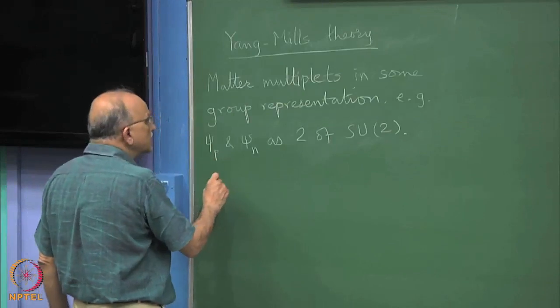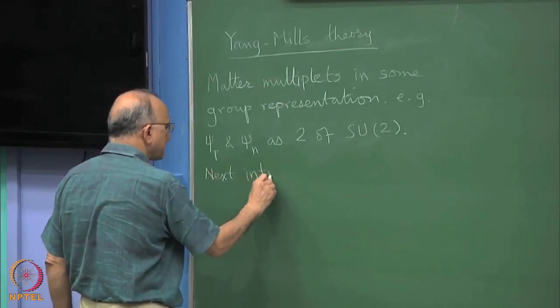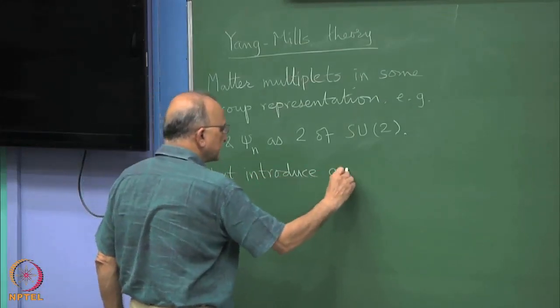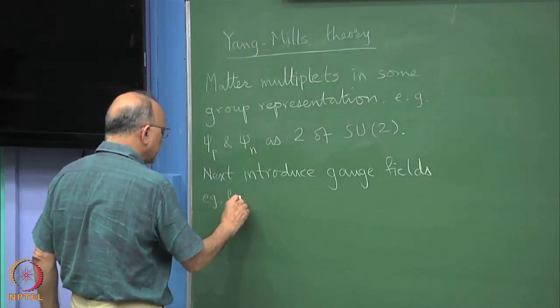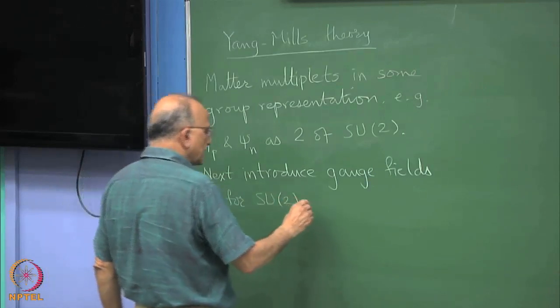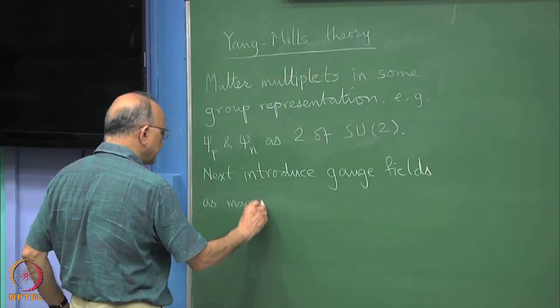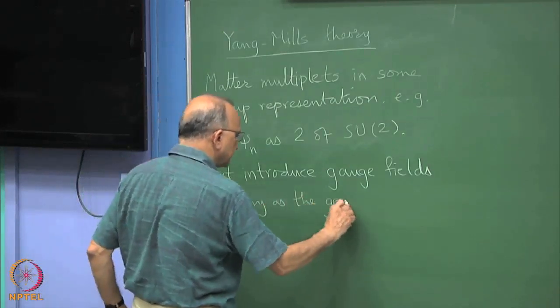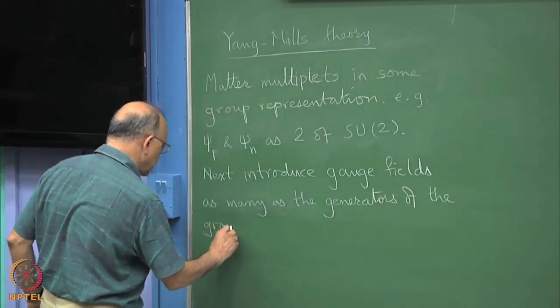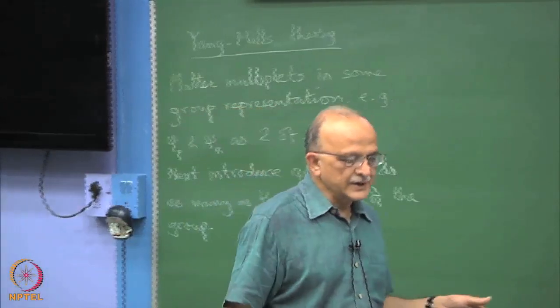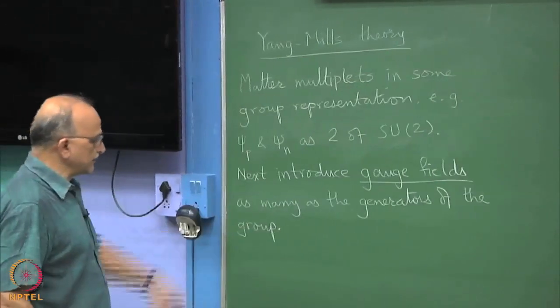So then we say gauge fields, for example, for SU(2), so introduce gauge fields as many as the generators of the group. As you know SU(2) has representation 2, it has 3, it has 5, whichever representation that is because the number of gauge fields needed is always the same, it is just the number of generators.